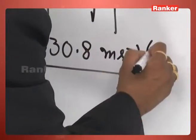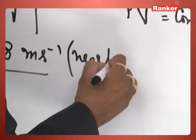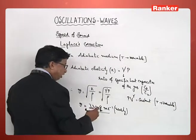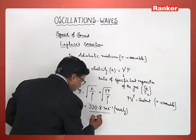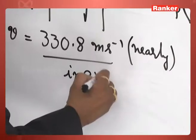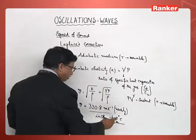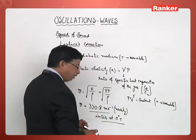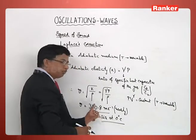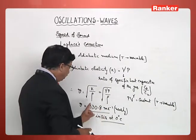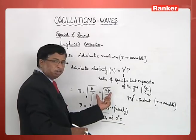So they got a value of 330.8 meters per second nearly, in air at 0 degrees centigrade. At this temperature, in this particular medium, the speed of sound has been calculated as 330.8 meters per second according to this formula.